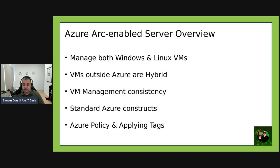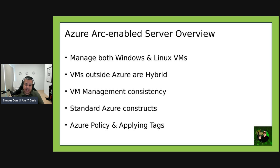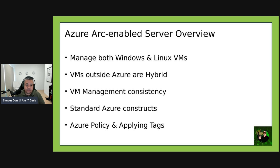Azure Arc enabled servers essentially lets you manage Windows and Linux physical servers and virtual servers hosted outside of Azure — on your corporate network or another cloud provider. For the purposes of Azure Arc, these machines hosted outside of Azure are considered hybrid machines. The management of hybrid machines in Azure Arc is designed to be consistent with how you manage native Azure VMs, using standard Azure constructs such as Azure Policy, applying tags, and so on.